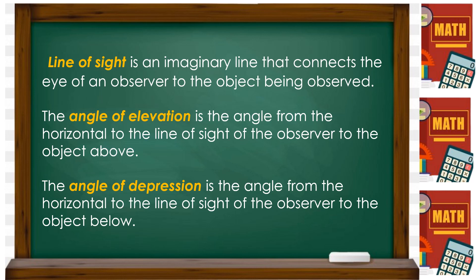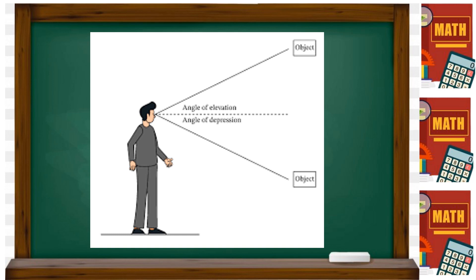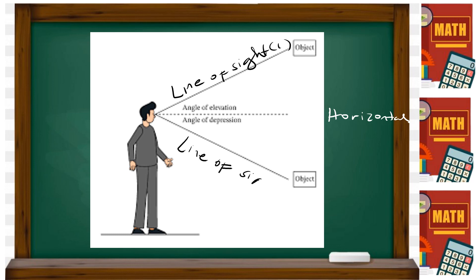To illustrate that, we have the line of sight, the horizontal line, the angle of elevation, and the angle of depression. This is our horizontal line. We have two lines of sight. From the horizontal going above — that is the angle of elevation.